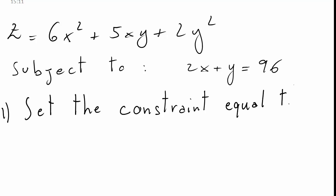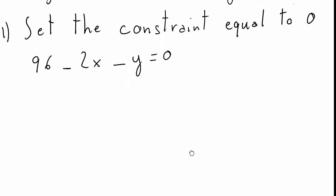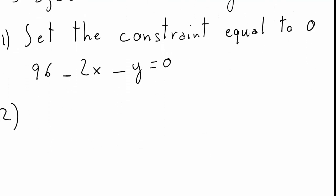So step by step: the first step is setting the constraint equal to zero. Our constraint as I said is 2x plus y equal 96, so I just take 2x plus y to the right hand side and equalize that to zero.